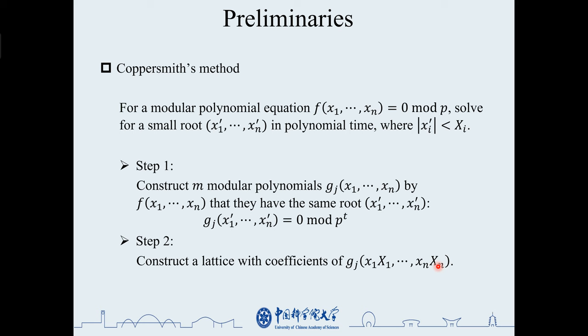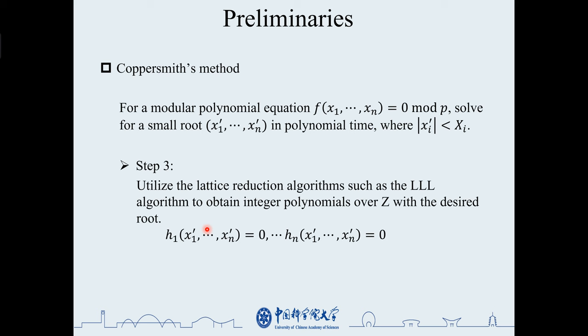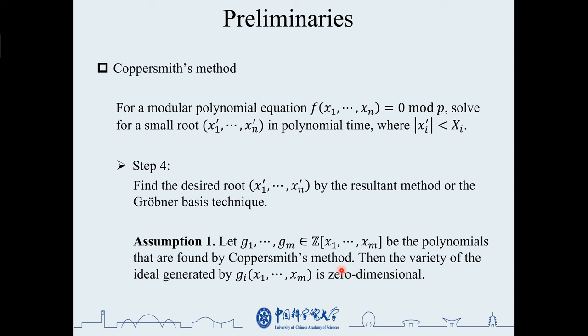The third step is to perform the lattice reduction algorithm on the lattice to obtain the equation over integer field with the desired root. The fourth step is to solve the root by the resultant method or the Grobner basis technique.